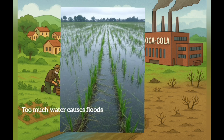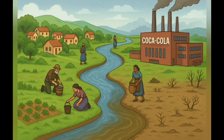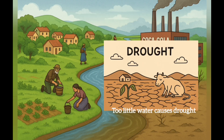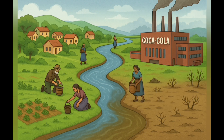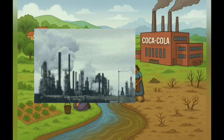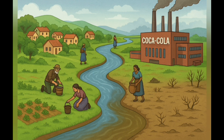Too much water causes floods and damages crop roots. Too little water causes droughts. Factories need water but often compete with farming and homes for water supply. Factories use too much water and release too much pollution, often because of lack of proper planning.